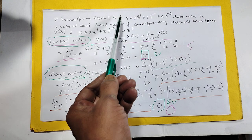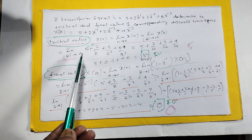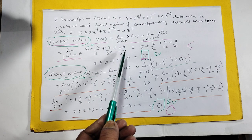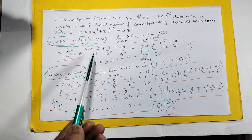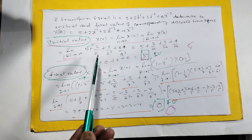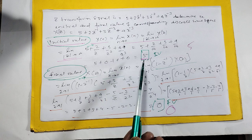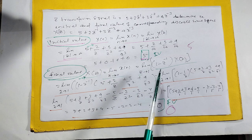So this is given in X(Z). Z tends to infinity. This is the given signal. You put it. Put Z in every case as infinity. Answer will come 5. That is, initial value is 5.